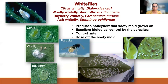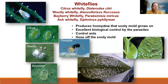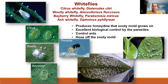Whiteflies are another honeydew-producing insect present in the citrus system. Several species occur in California, including winged whiteflies and semi-wingless types like citrus whitefly and woolly whitefly. They suck sap, produce honeydew, and sooty mold develops on them. Ants protect these insects from natural enemies. One way to manage them is by controlling ants; you can also hose off sooty mold and whiteflies with water.